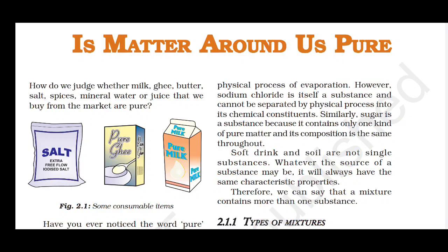Similarly, sugar — which is glucose, C6H12O6 — is also a pure substance. Sugar is made from carbon, hydrogen, and oxygen, but we cannot separate these elements from sugar by physical methods. Therefore, sugar by itself is a pure substance.